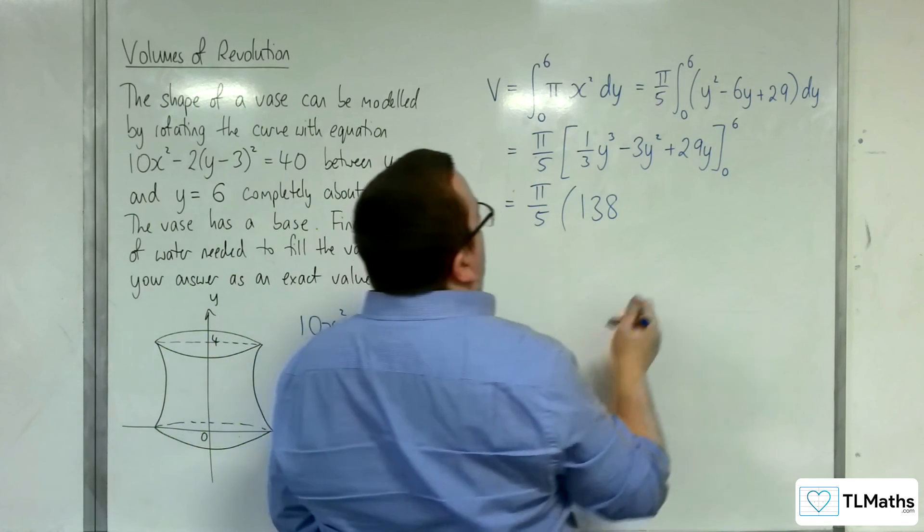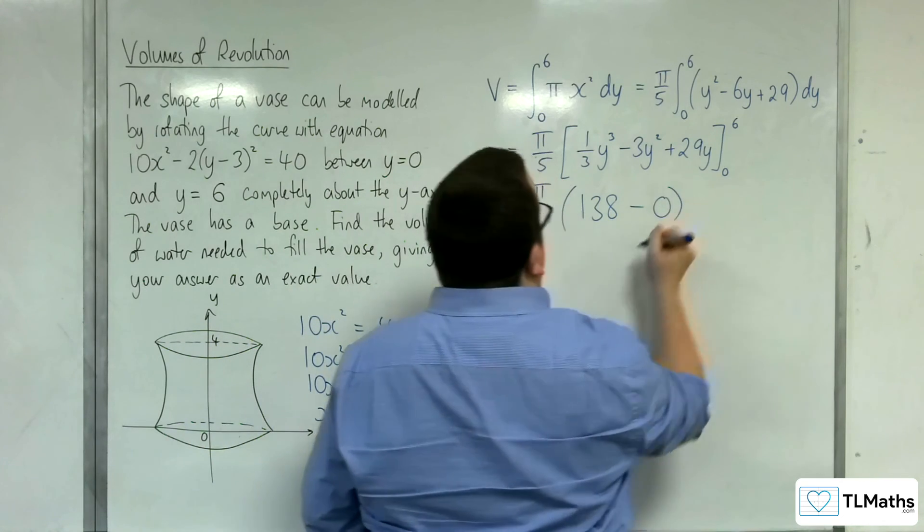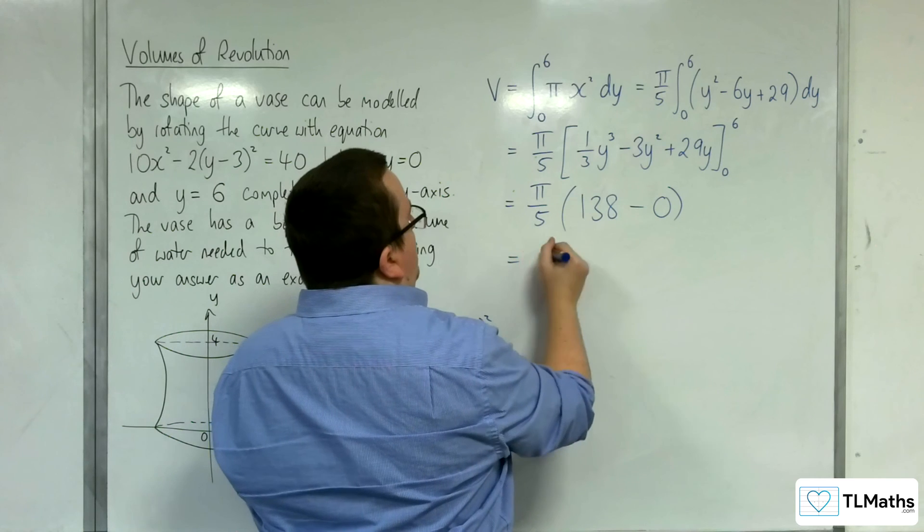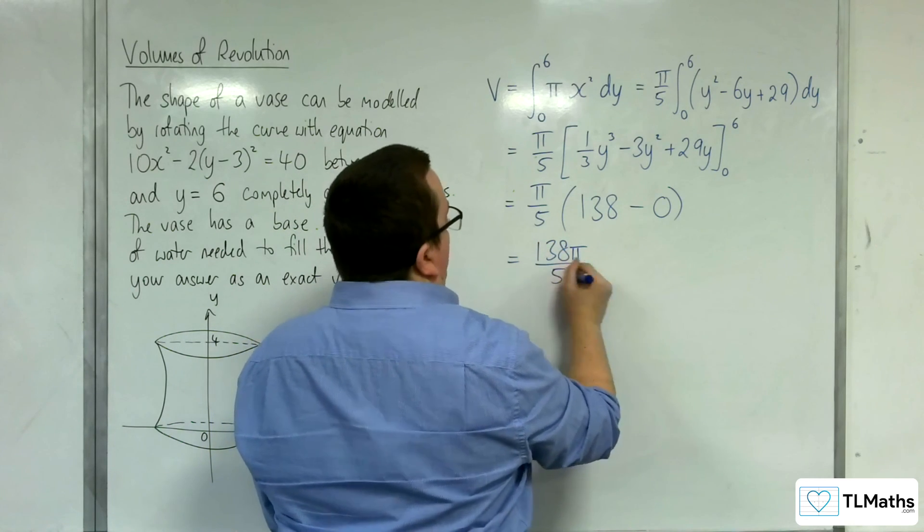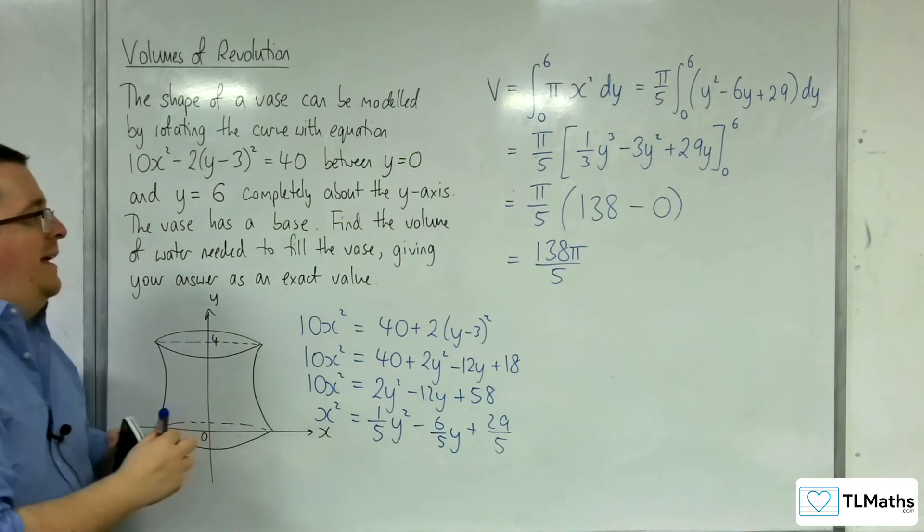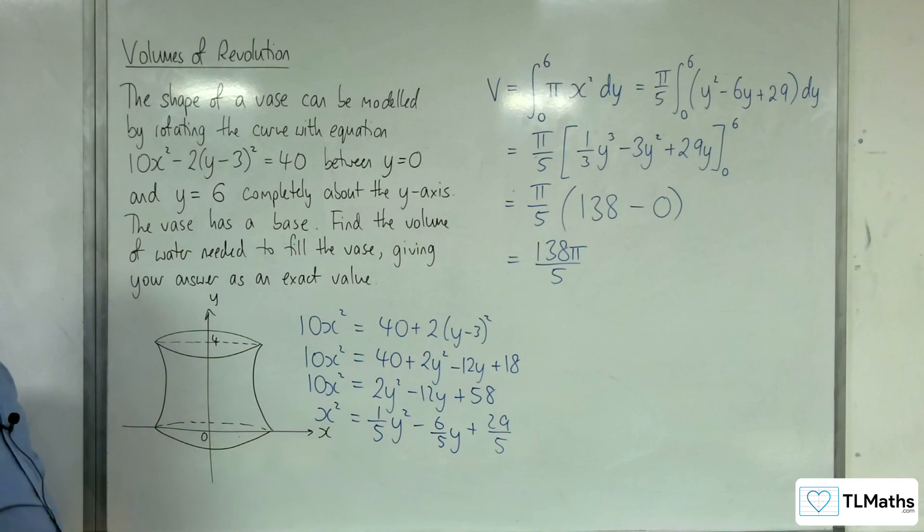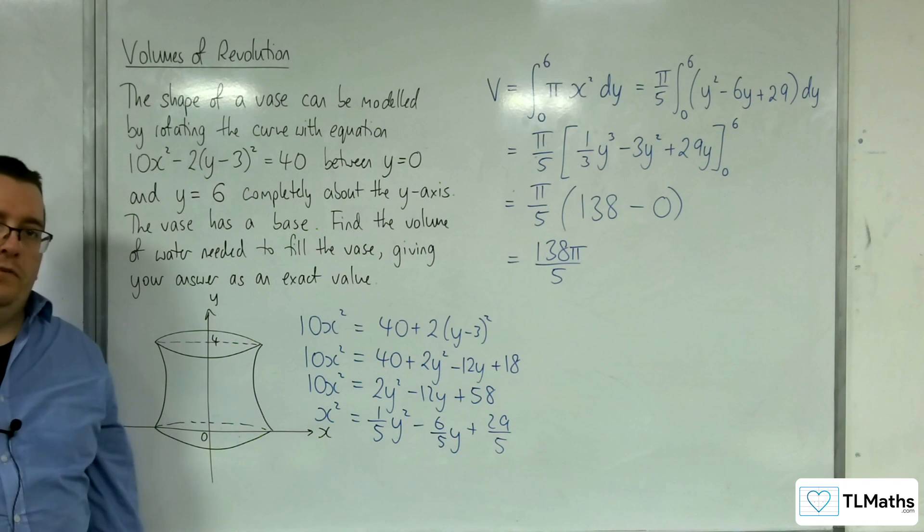Then substitute in the 0, it's just going to give me 0. So we get 138π/5, and that is the exact volume of water that would fill the vase.